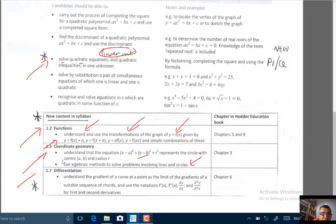One more change in 1.7 differentiation: we have to understand the gradient of a curve at a point as the limit of the gradients of a suitable sequence of chords, and use the notations f'(x), f''(x), dy/dx, and d²y/dx² for first and second derivatives. These are the changes for the Pure Maths 1 paper 1 syllabus.